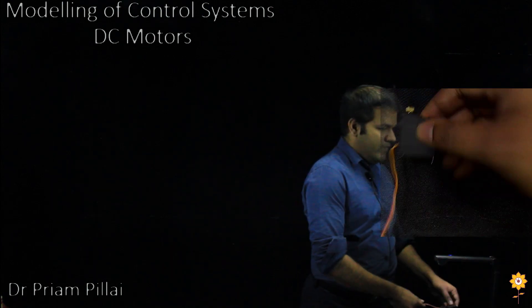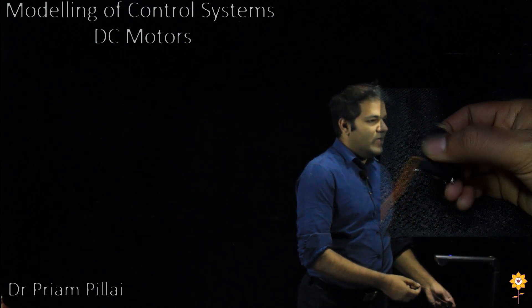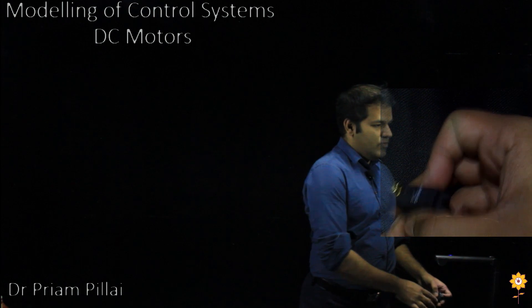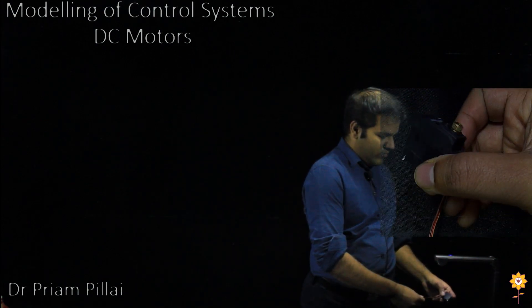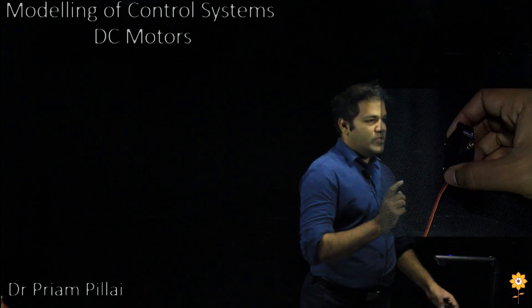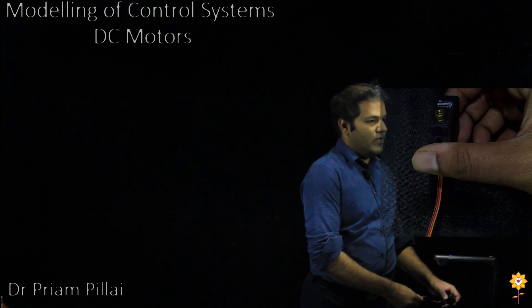You might also be familiar with this type of motor, which we call servo motors. These have three cables coming out of them. These are used for small robotics applications and many other small systems where you don't need too much torque, but you need a precise angle positioning for your device.